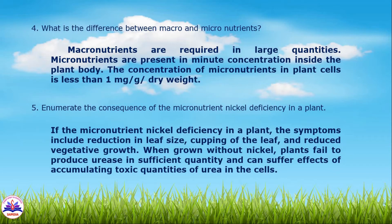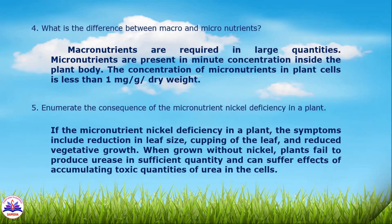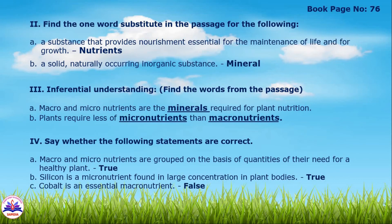Fourth question: what is the difference between macro and micronutrients? Macronutrients are required in large quantities, while micronutrients are required in less weighted and lesser quantities. Fifth question: enumerate the consequences of micronutrient nickel deficiency in a plant. If there is nickel deficiency in a plant, the symptoms include reduction in leaf size, cupping of the leaf, and reduced vegetative growth. Without nickel, plants fail to produce urease in sufficient quantity and can suffer from accumulating toxic quantities of urea in the cells.